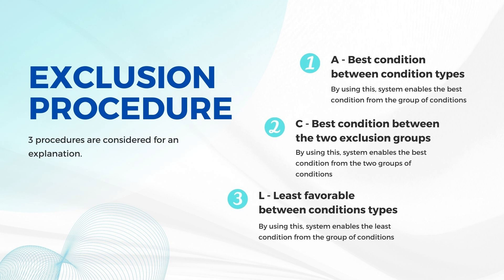Procedure C — Best Conditions Between Two Exclusion Groups. By using this, the system enables the best condition from the two groups of conditions. If we have two sets of exclusion groups, we can prioritize them as per the business need.